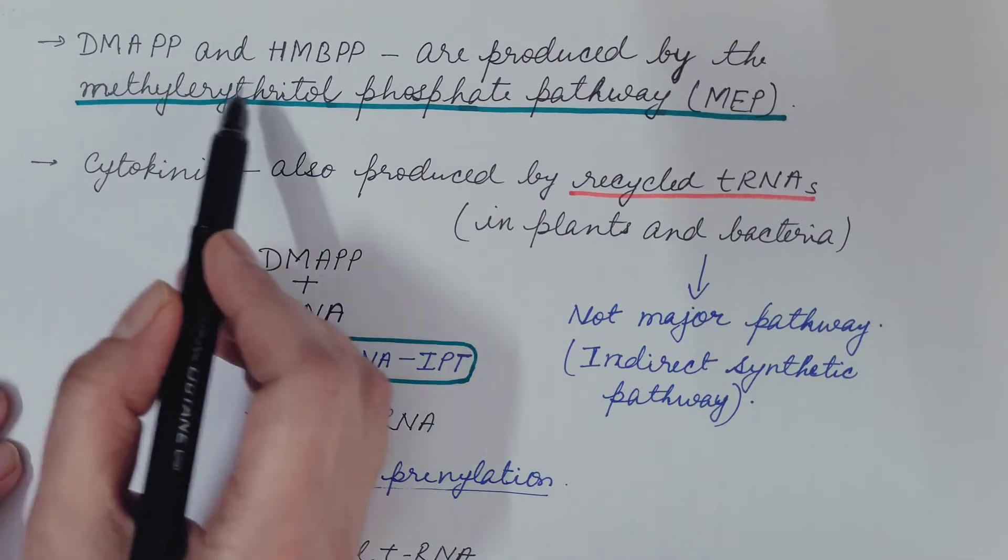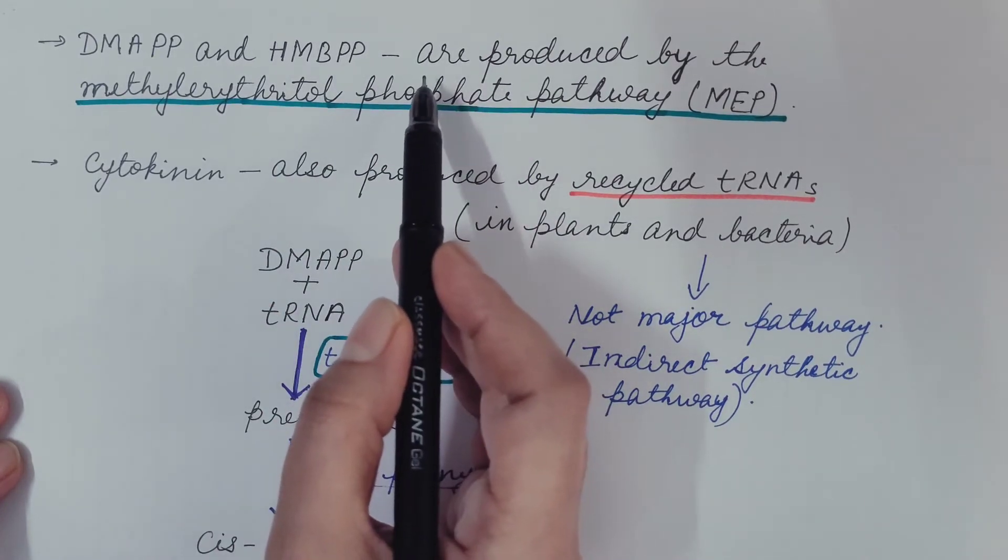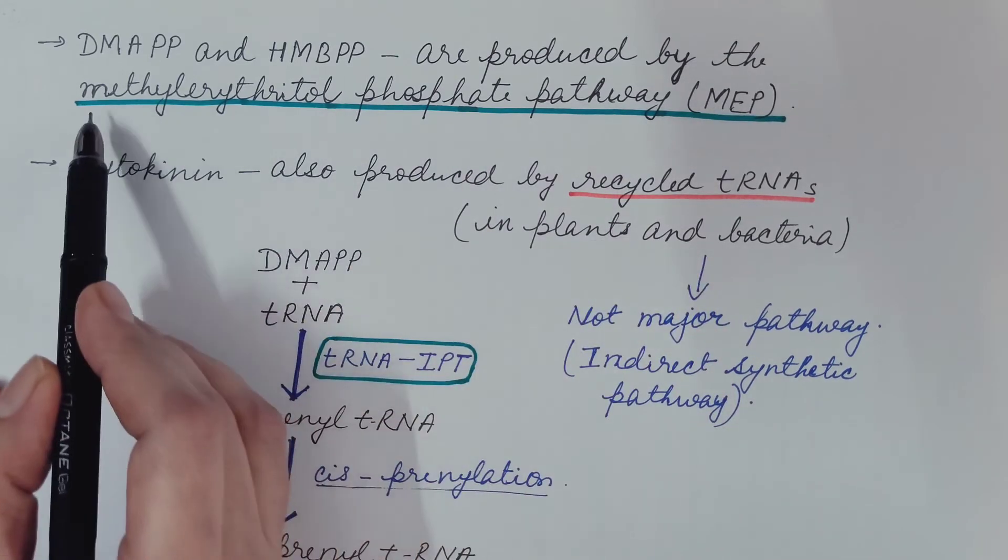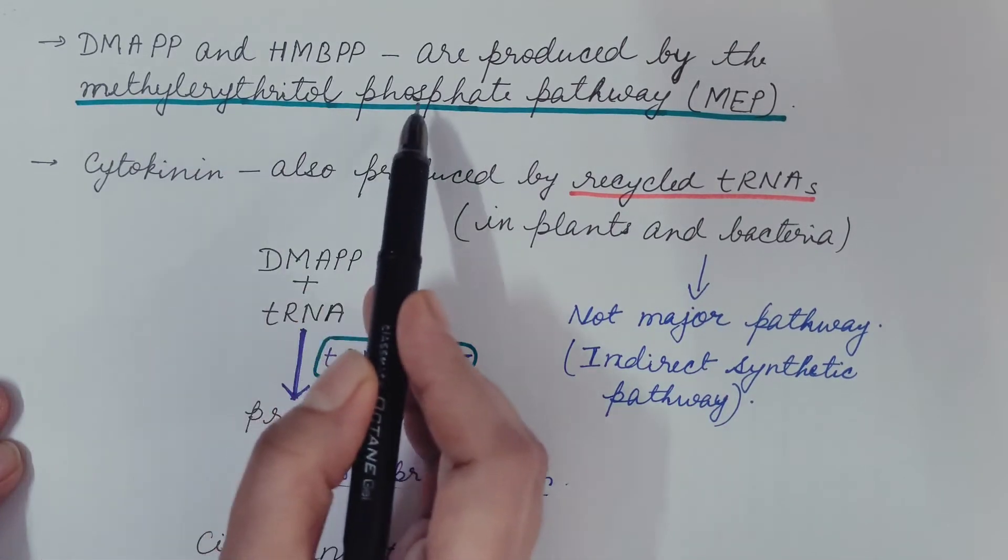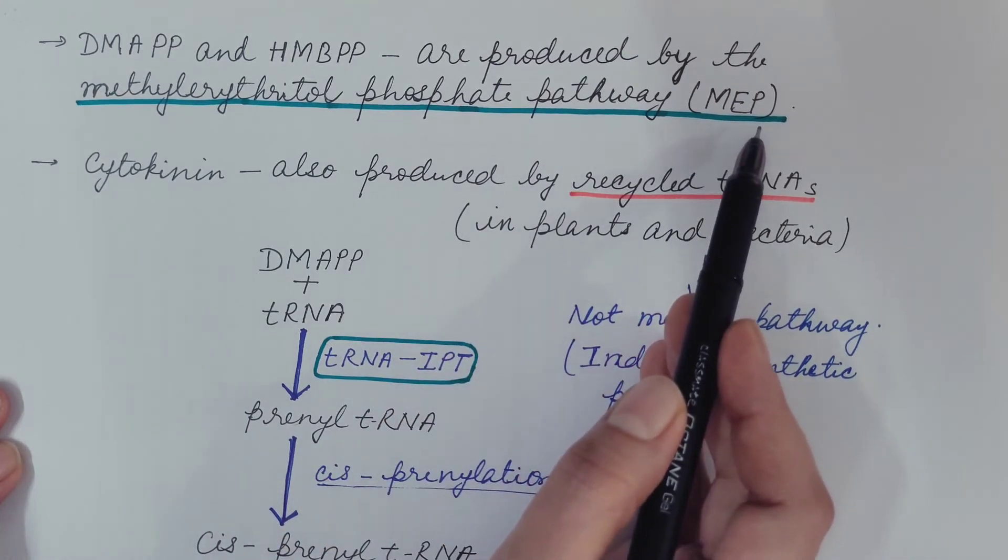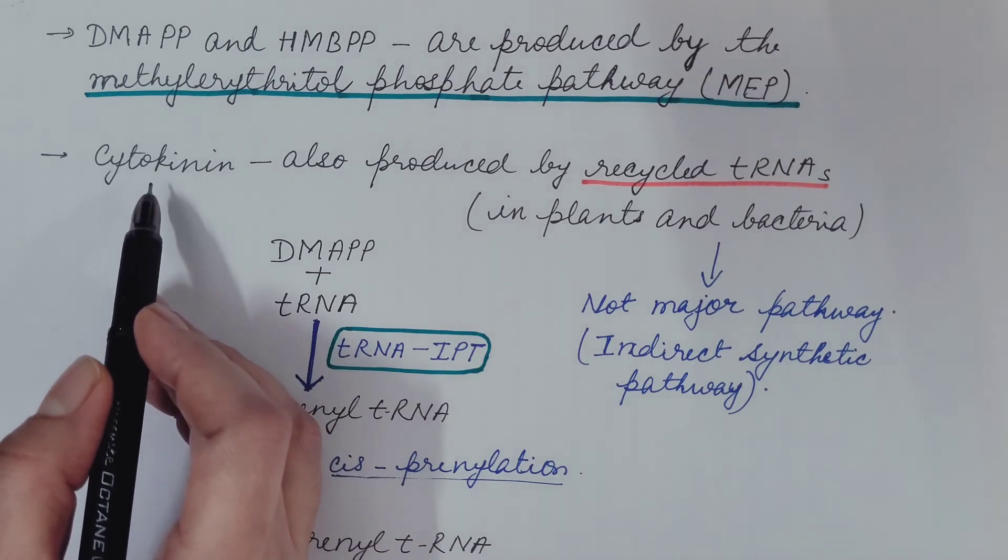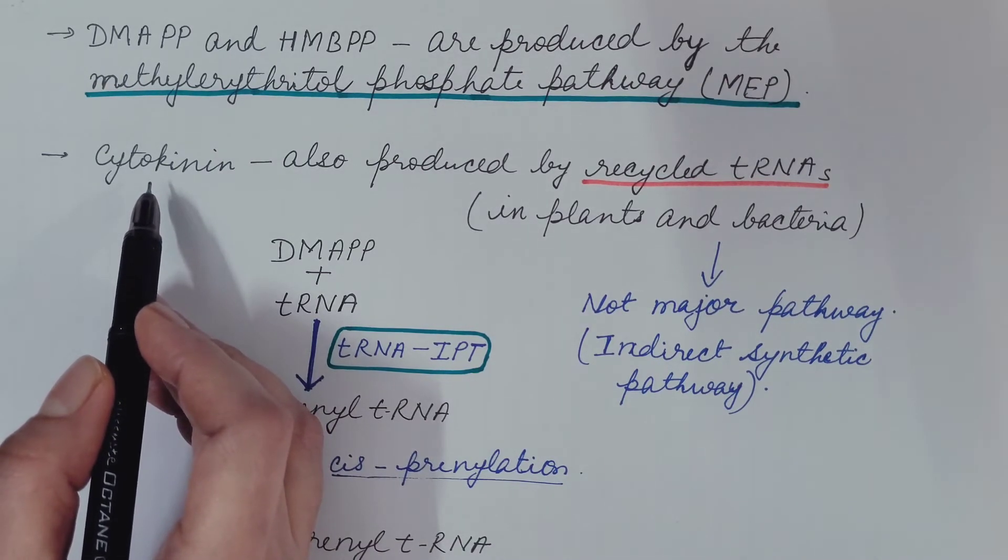DMAPP and HMBPP that are used in the first step are produced by the methyl erythritol phosphate pathway, in short MEP pathway. So in addition to the above pathway, which is an important pathway for the biosynthesis of cytokinin in plants.